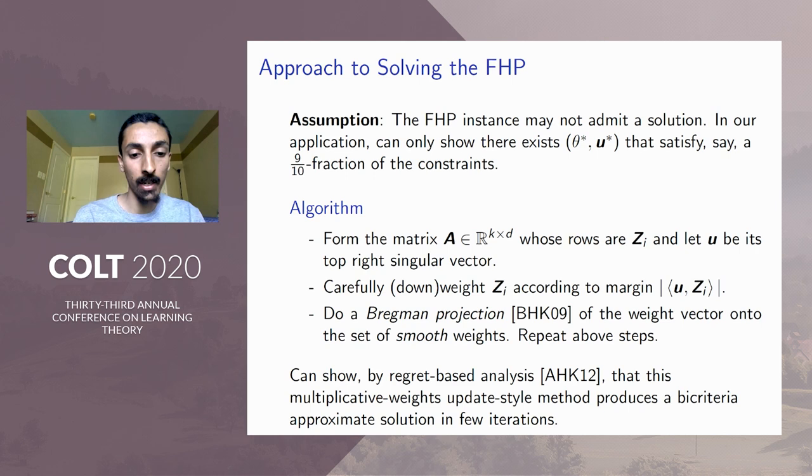So using this much weaker assumption, we're able to design a multiplicative weights update style algorithm, which iteratively will find a bi-criteria approximate solution. So it turns out that we're able to rely on some existing machinery due to Barak et al. and Arora et al. And this is how we avoid having to directly solve the semidefinite program. Instead of solving the semidefinite program, we're able to design just some simple iterative algorithm.